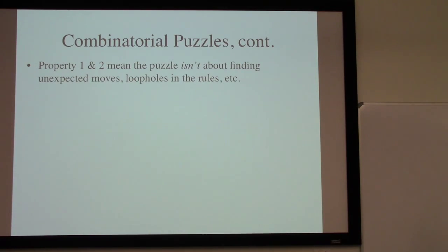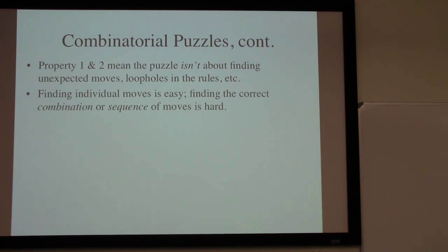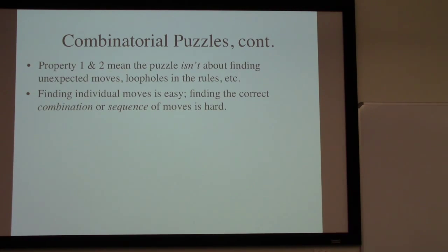Those first properties really mean the puzzle isn't about finding unexpected moves or ways around the rules. We are expecting to follow the rules as stated, even when puzzles seem like there should be some other way of solving them. Finding individual moves is easy — we're expected to just write down a list of them all. But the hard part is finding the correct combination or sequence of moves to get from the starting position to some final goal.